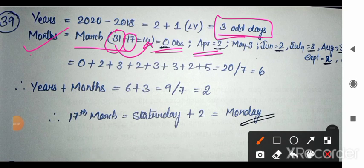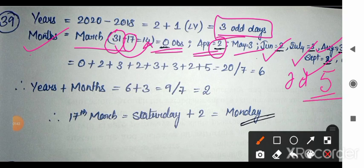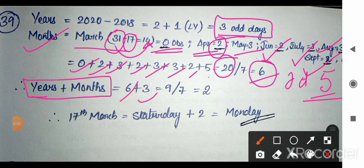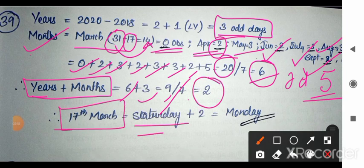April has 30 days — divide 30 by 7, remainder is 2 odd days. May has 31 days — divide by 7, remainder 3 odd days. June gives 2, July gives 3, August gives 3, September gives 2, and October 5th gives 5. Total: 0+2+3+2+3+3+2+5 = 20. Divide 20 by 7, remainder is 6 odd days from months. Add years: 6+3 = 9, divide by 7 gives remainder 2.